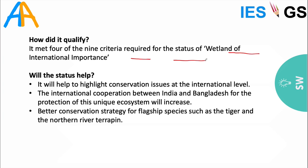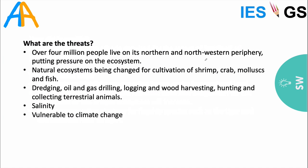Ramsar status for Sundarbans will highlight conservation issues at the international level, make available new scientific methods and technologies, and encourage cooperation between India and Bangladesh for protecting this continuous ecosystem. It will also enable better conservation strategies for flagship species such as tiger and northern river terrapin.